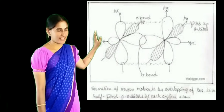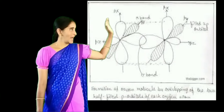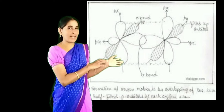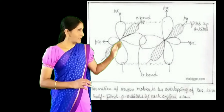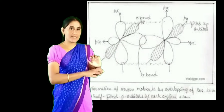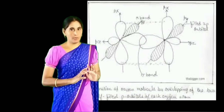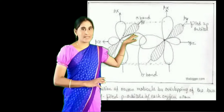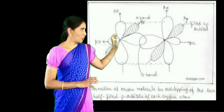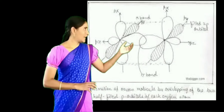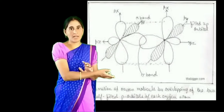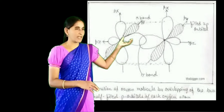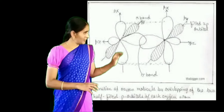Oxygen has atomic number 8 and its configuration is 1s2, 2s2, 2p4. Oxygen has two unpaired electrons — one in 2py and one in 2pz orbital. Oxygen will involve in bond formation with another oxygen forming a covalent bond, resulting in formation of two bonds — a double bond. The pz orbital of one oxygen and the pz orbital of another oxygen will involve in side-on-side overlap, forming one pi bond. The py orbital of one oxygen and the py orbital of another oxygen will involve in end-on-side overlap, forming one sigma bond.